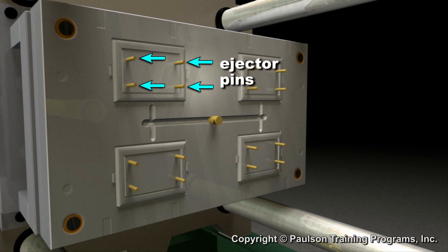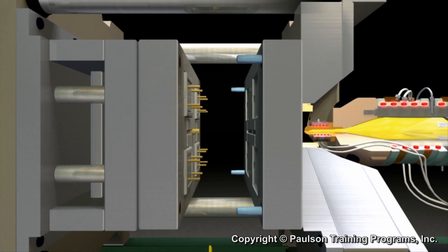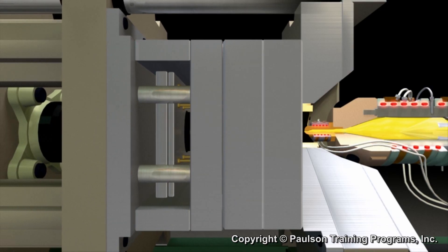These are ejector pins. When the mold is opened, these pins, along with the sprue puller pin, are pushed forward to eject the runner and plastic parts out of the mold.